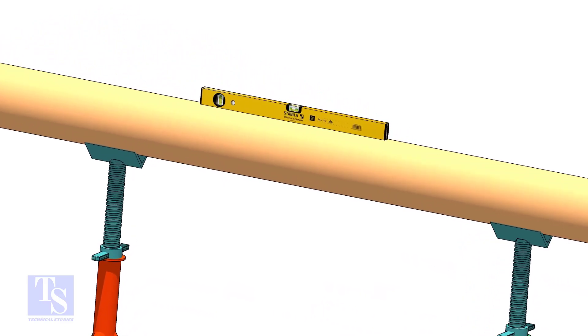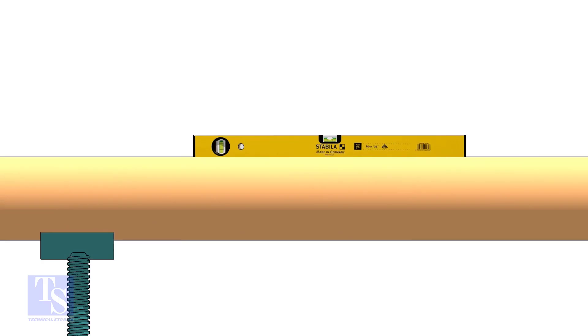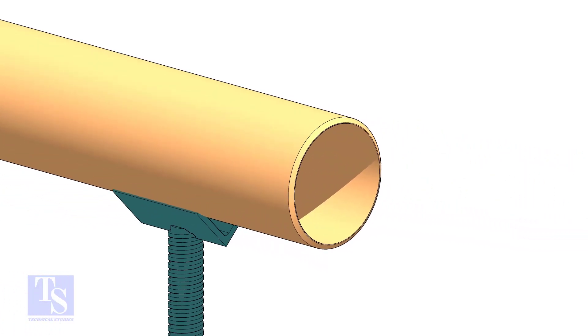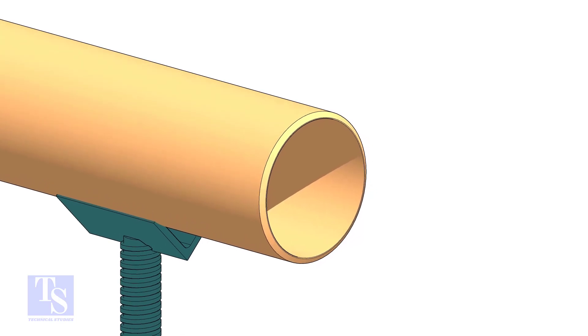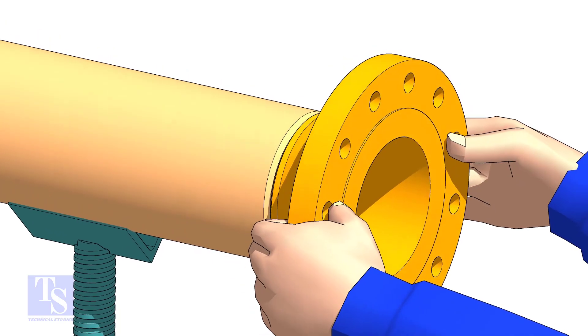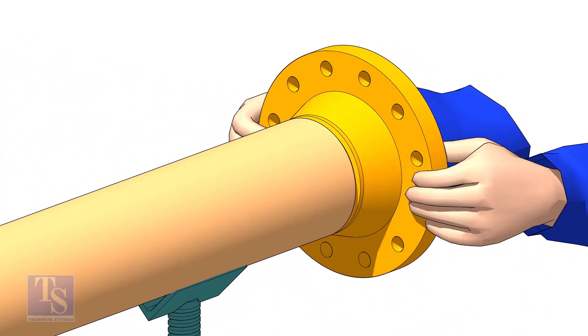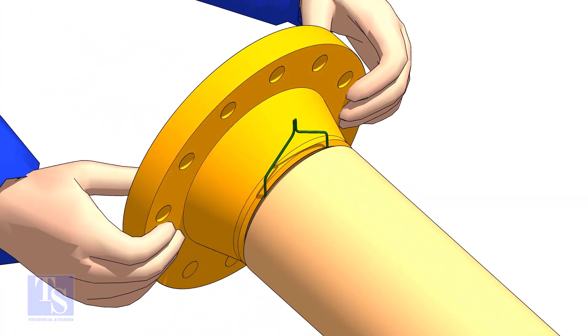Level the pipe. Hold the flange on the pipe face as shown. Put the gap rod in the joint. Look through the flange and the pipe, and adjust the overlap.